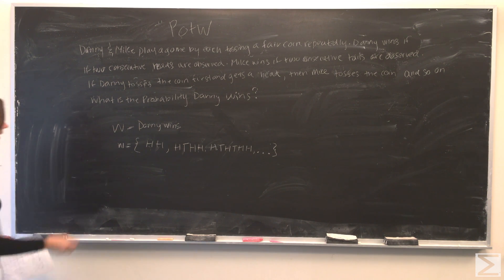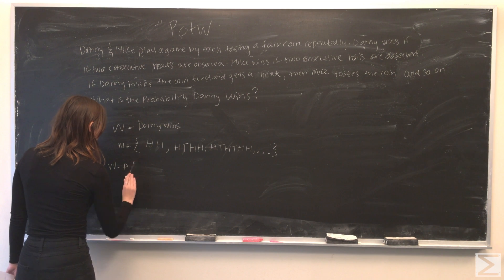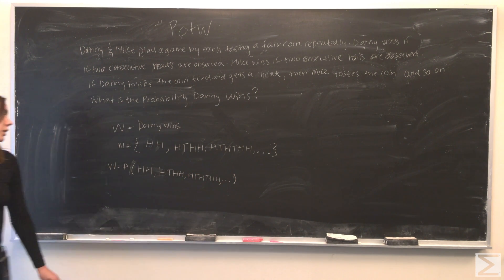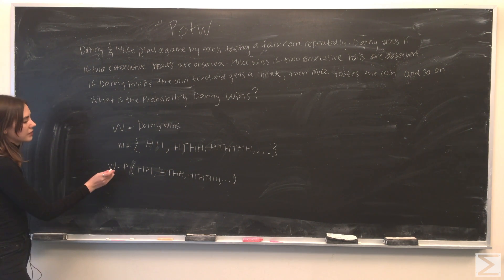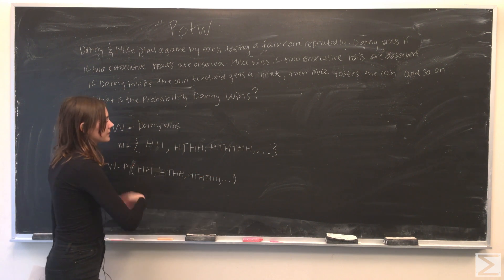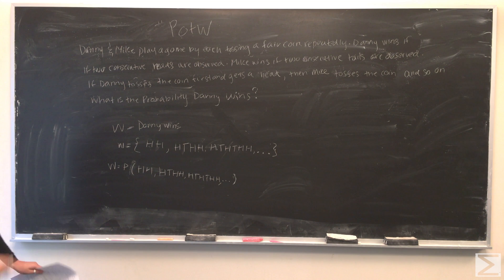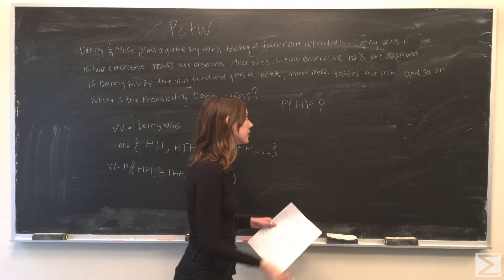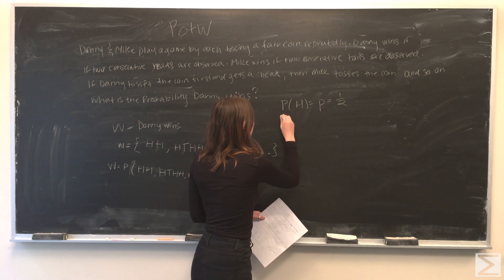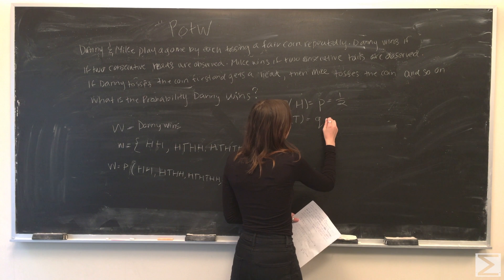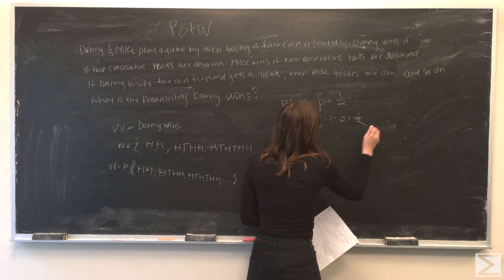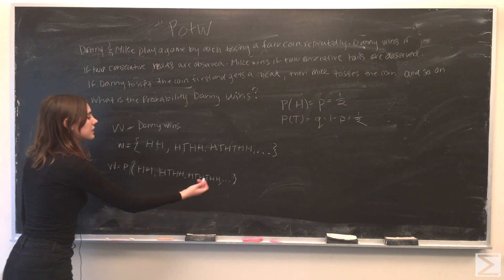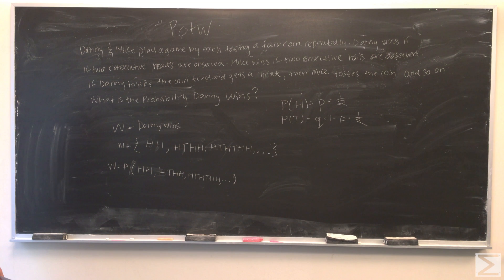So now what we can do is find that W equals the probability of these events occurring. We're trying to find the probability that event W occurs — it's an infinitely continuous sequence of different flips. Since this is a fair coin, the probability of getting heads equals p which is one half, and the probability of getting tails equals q which is one minus p, also equal to one half.